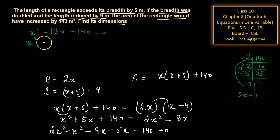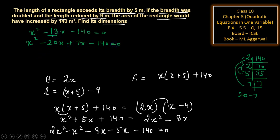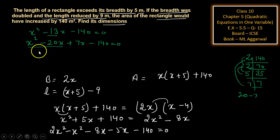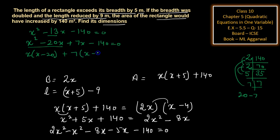We need two numbers whose product is 2 times 140 equals 280 and whose difference gives minus 13. Those numbers are minus 20 and plus 7. Since 20 is greater, it takes the negative sign. So we write 2x squared minus 20x plus 7x minus 140 equals 0. Factoring: x(2x minus 20) plus 7(x minus 20) equals 0, giving (x minus 20)(2x plus 7) equals 0.